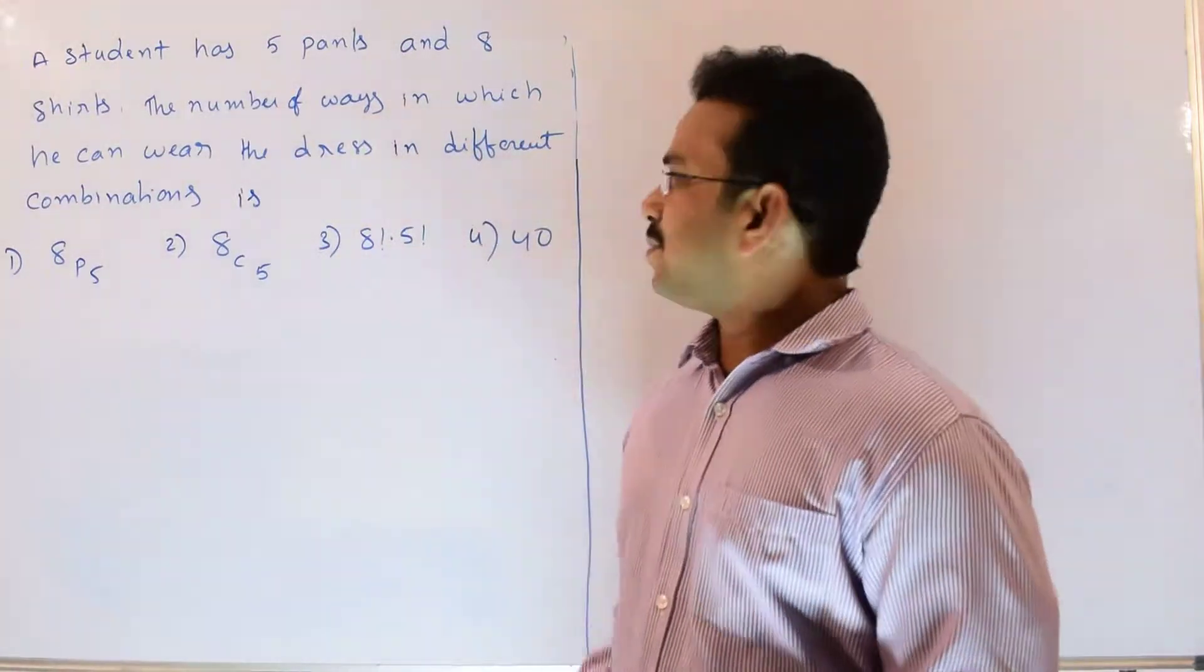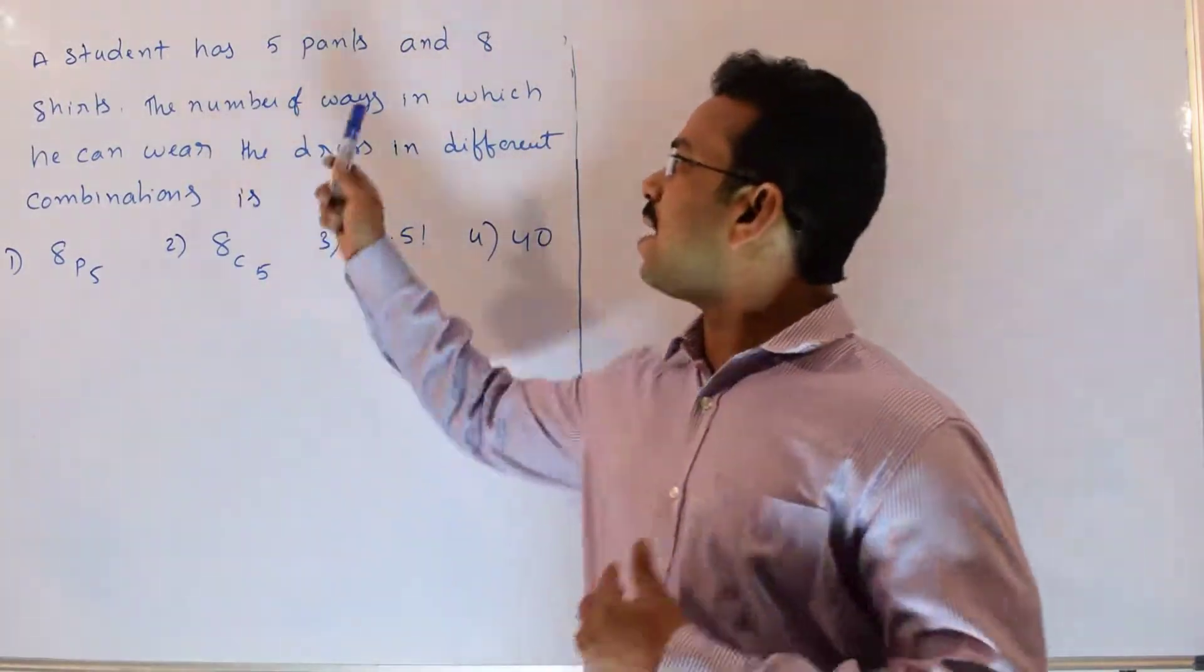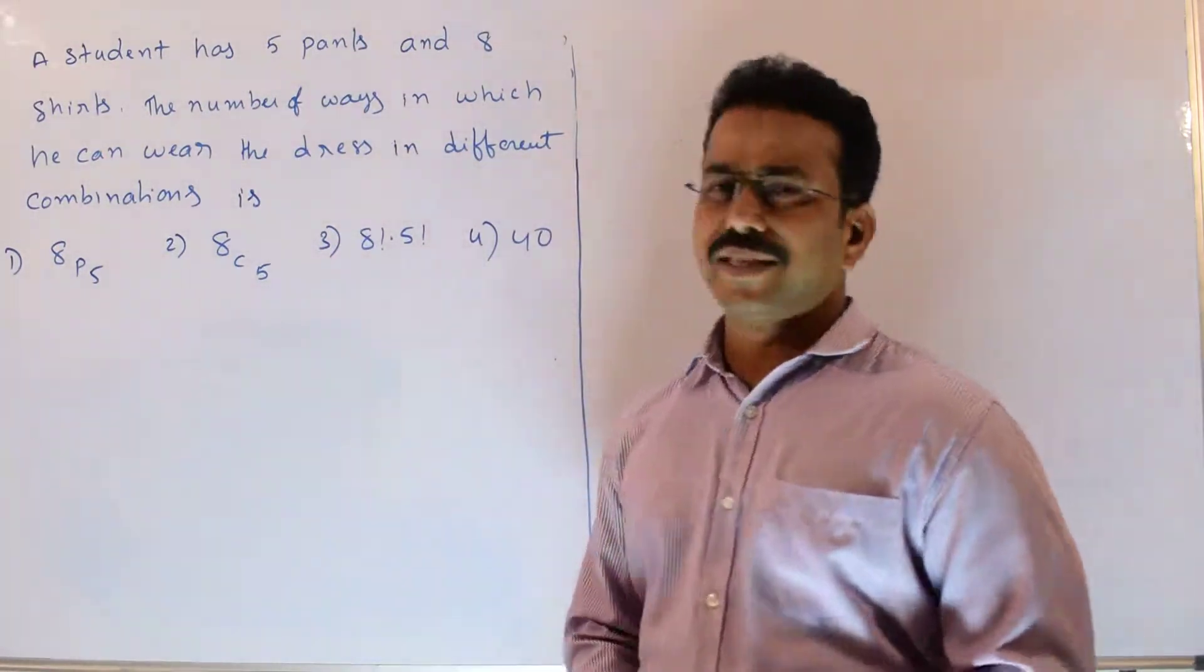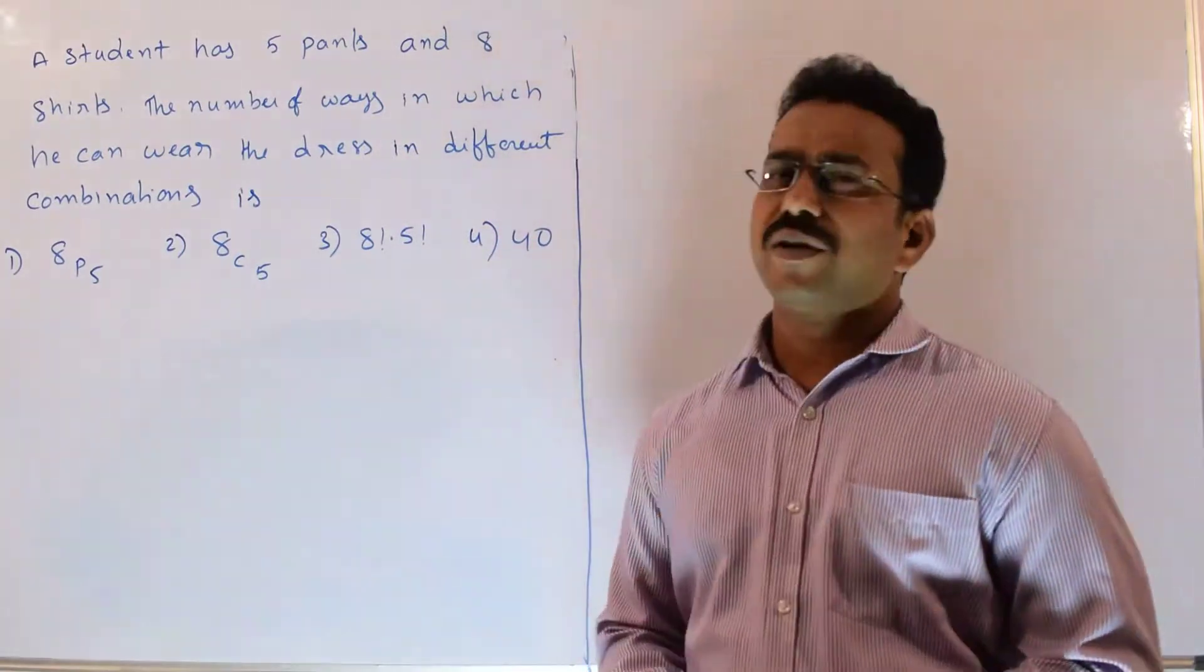Hi, let's discuss the solution of the given question. A student has 5 pants and 8 shirts. Find the number of ways in which he can wear the dress in different combinations.